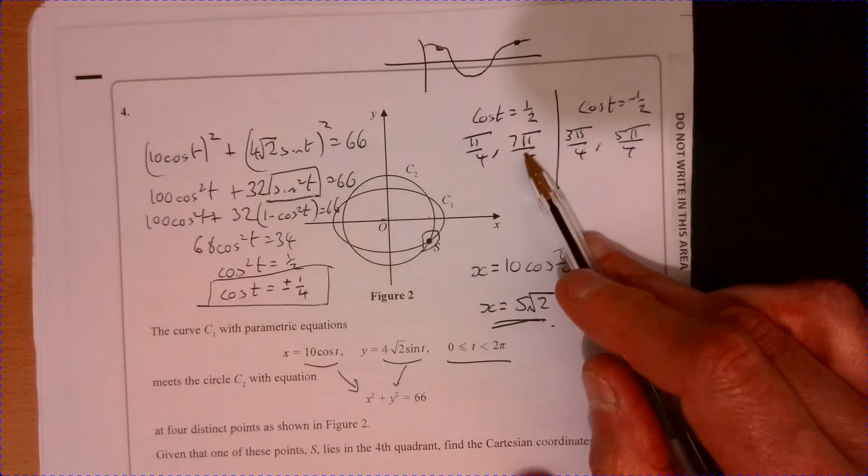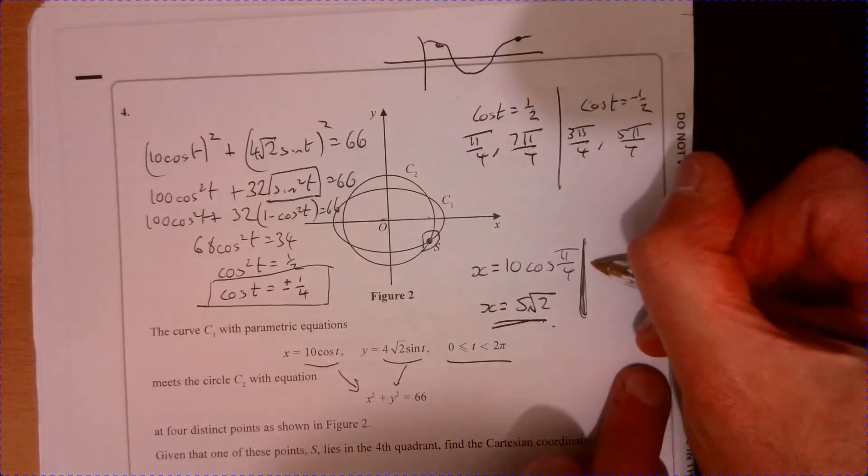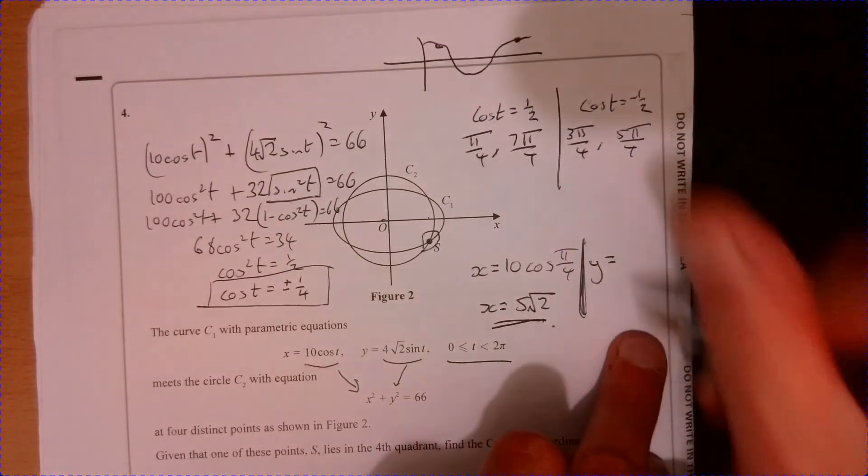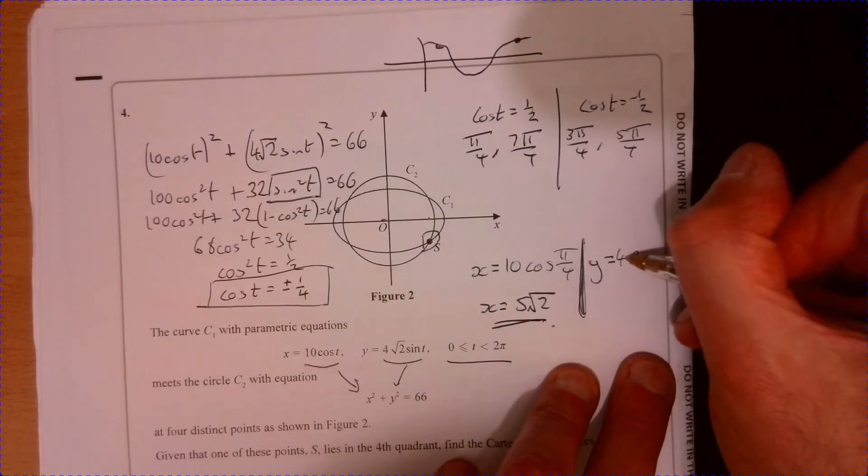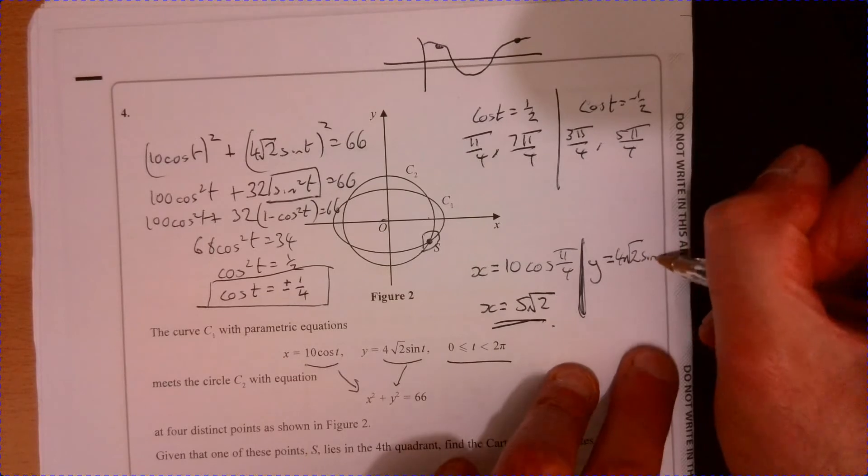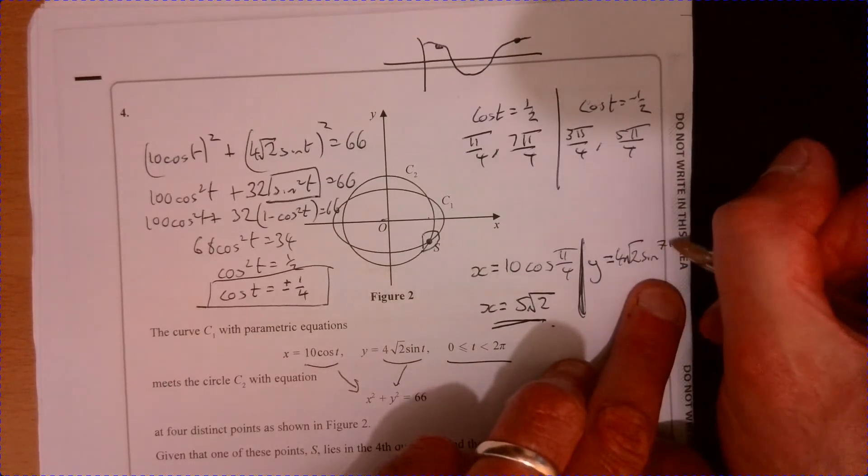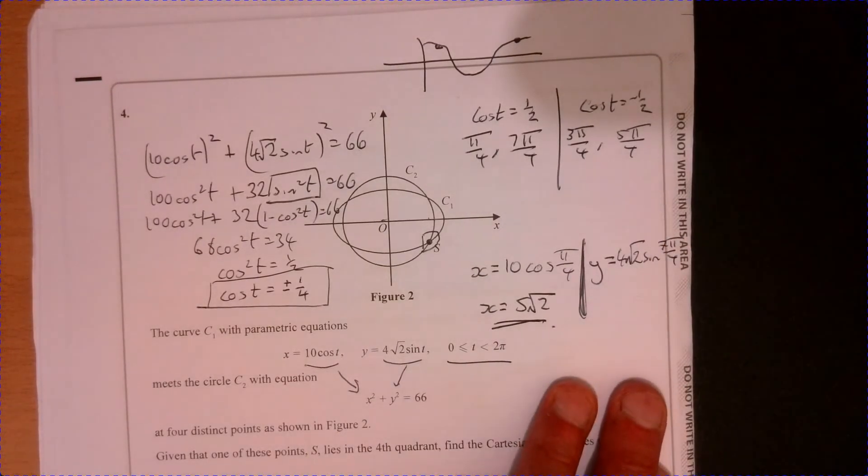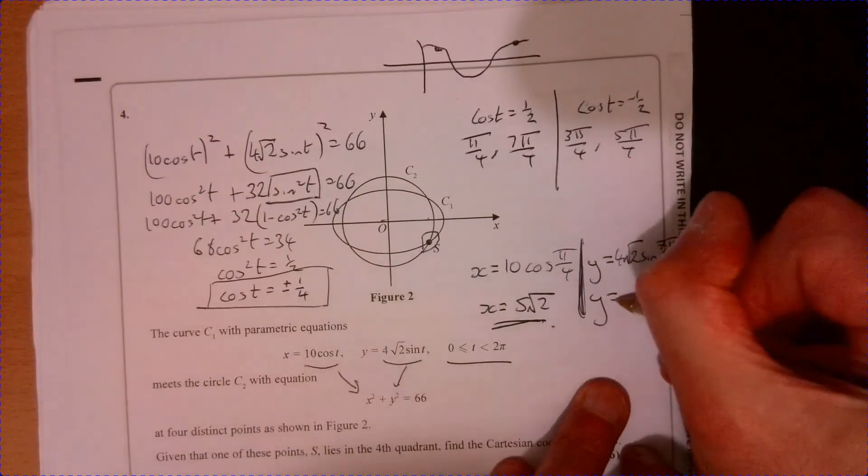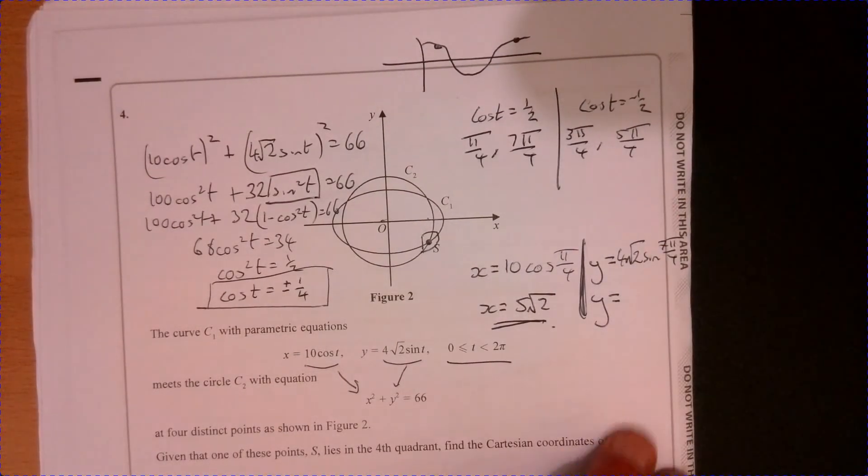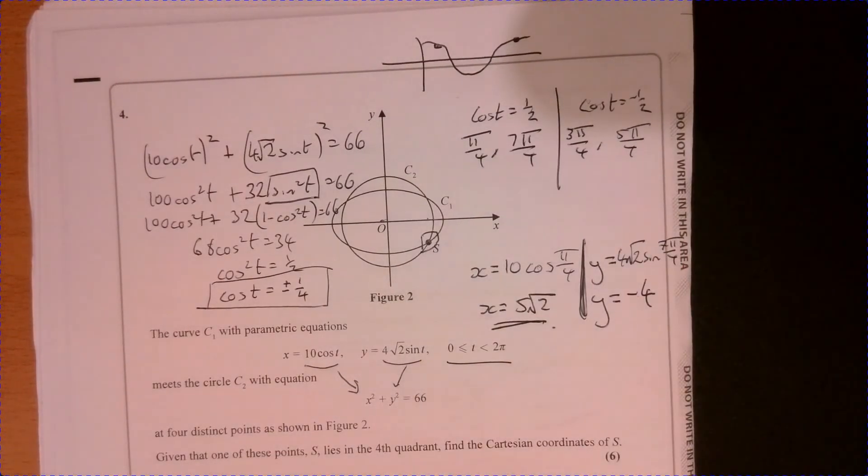So if I substitute this into our Y value, fingers crossed, we then get a negative answer. So four root two sine seven pi over four. And if you do that, just pop it into your calculator. That's absolutely fine.